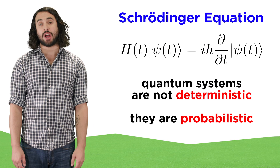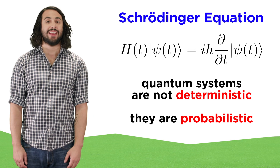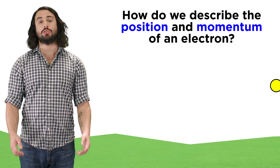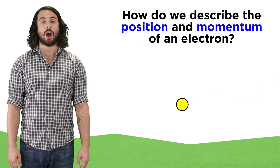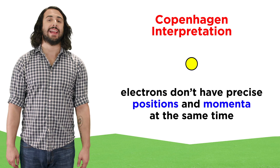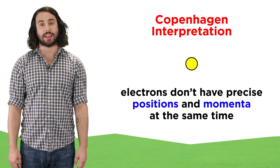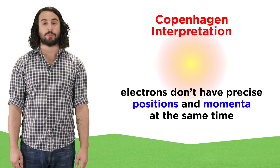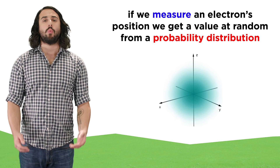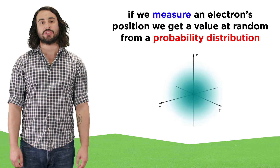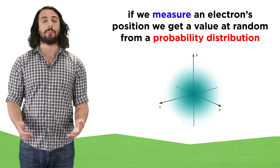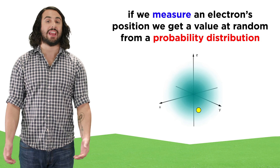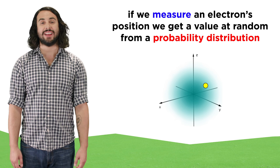Instead, as we saw with the Schrödinger equation, the quantum realm is probabilistic in nature. This brought about the issue of how to describe the position and momentum of the electron. Under the Copenhagen interpretation of quantum mechanics, an electron simply does not possess precise values for both of these parameters at the same time. So when we take a measurement, the result is randomly drawn from a probability distribution. An electron will seem to be in a particular location if and only if we measure its location.